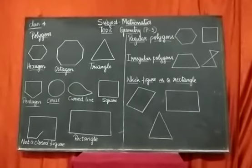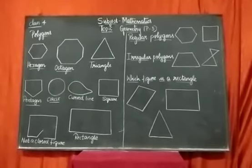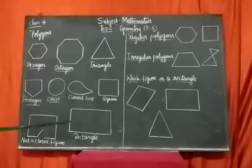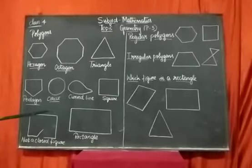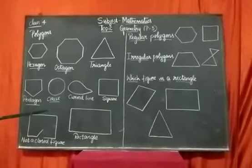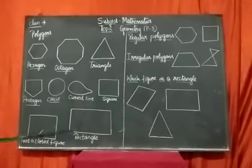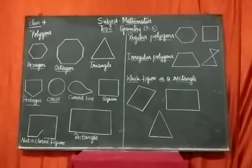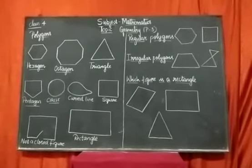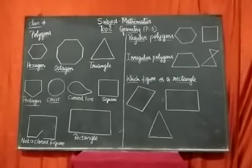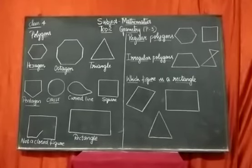Next we will go to rectangle. A quadrilateral in which opposite sides are equal is a rectangle. You can see the figure here — opposite sides are equal. In a rectangle, all angles are right angles.